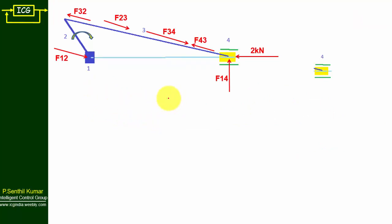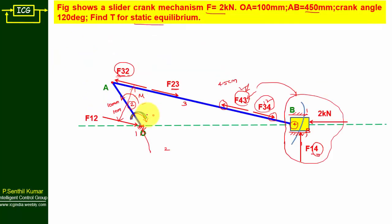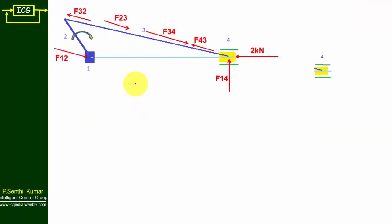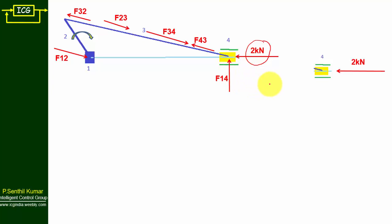Now we will move on to individual free body diagrams. This is the same free body diagram as before — just copy it. I am going to draw the individual free body diagram of the slider first, because the 2 kilo Newton force is known here. First draw the 2 kilo Newton force, then mark F14.